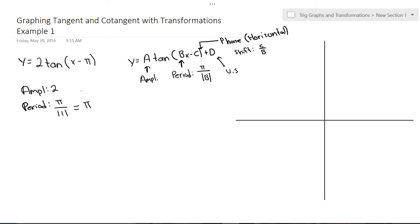And then we've got a C value, that's a change. So we've got a phase shift, and that equals C divided by B. Our C is just positive pi because it calls for minus C in the formula. So it's pi divided by B, which we figured out was 1. So we have a phase shift of pi.